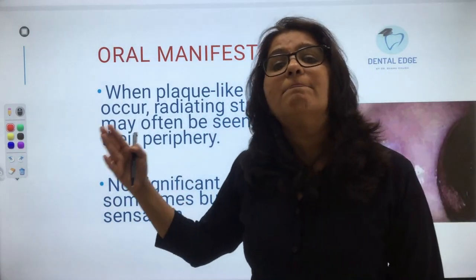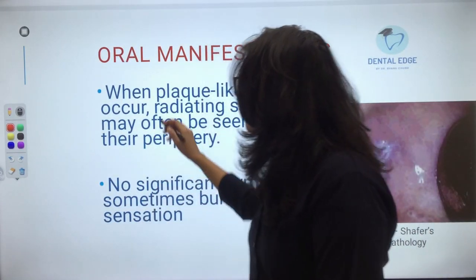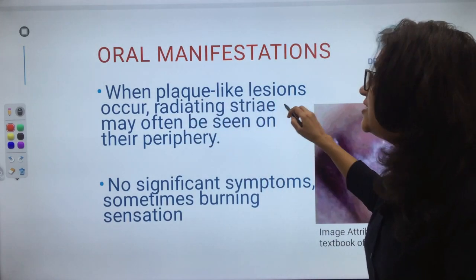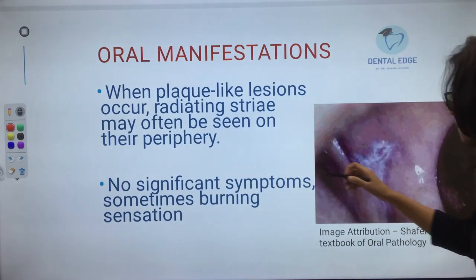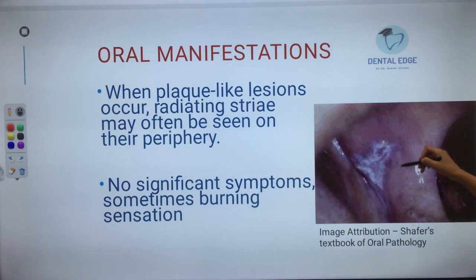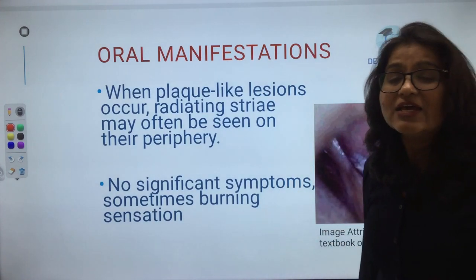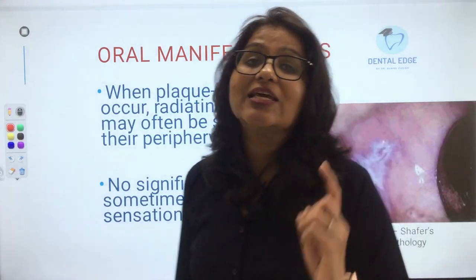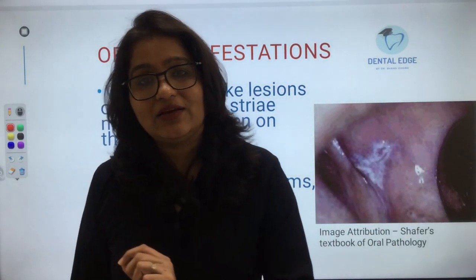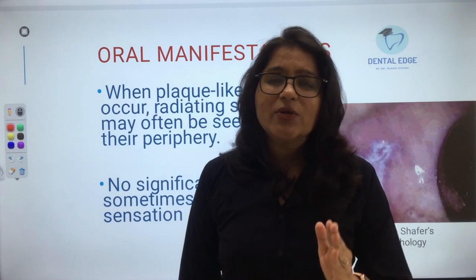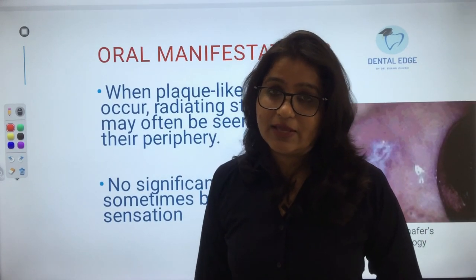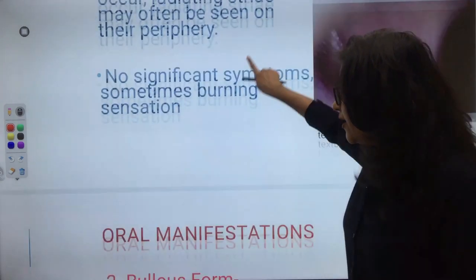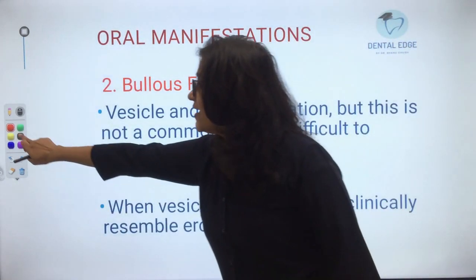When plaque-like lesions occur, radiating Wickham's striae may often be seen on their periphery. The reticular form is usually asymptomatic, though sometimes slight discomfort can be present.